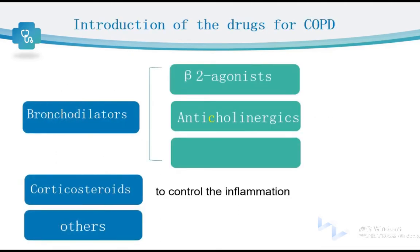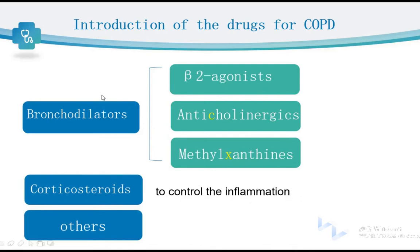Let's move to the drugs for COPD. The most important drugs for COPD are bronchodilators, which include three types: beta-2 agonists, anticholinergics, and methylxanthines. These drugs can dilate the bronchi. Another important drug class for COPD is corticosteroids, which help to control inflammation in the bronchitis and airways.